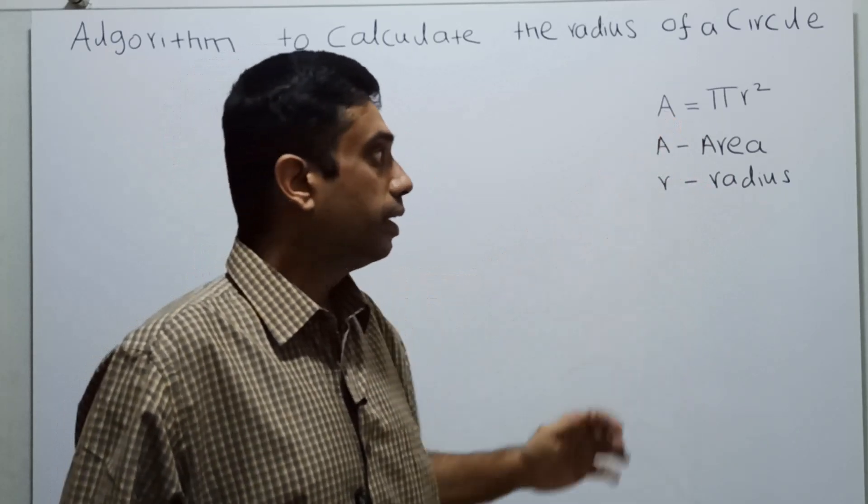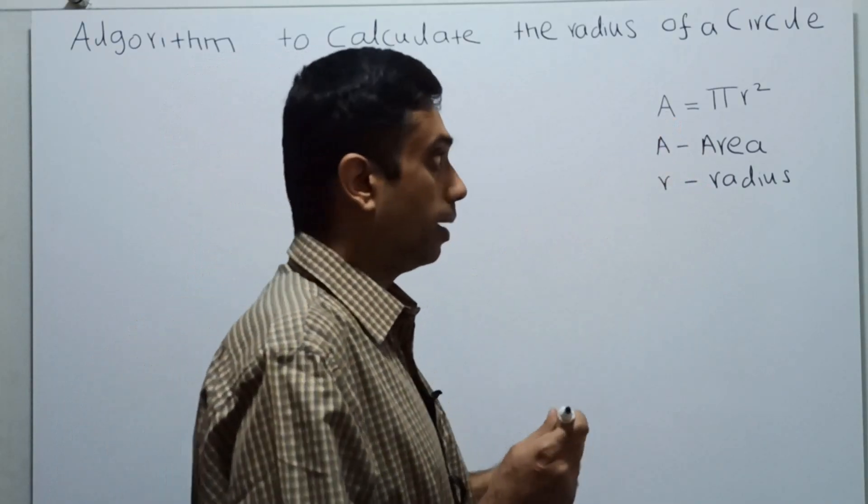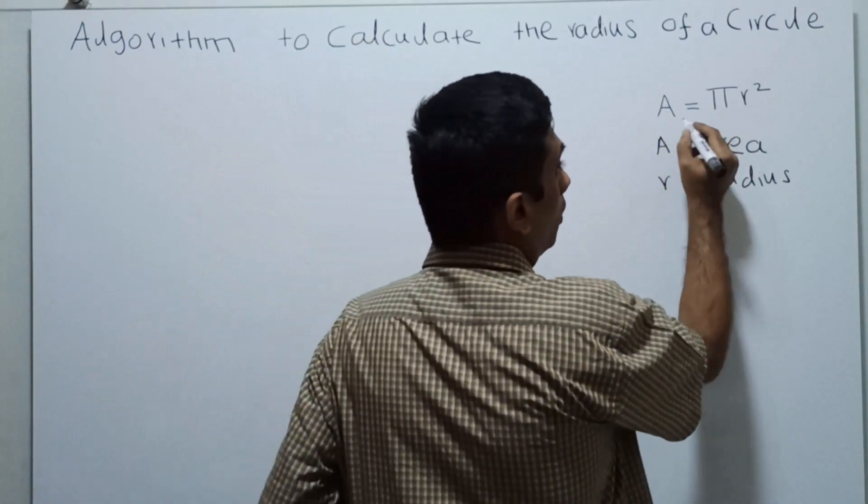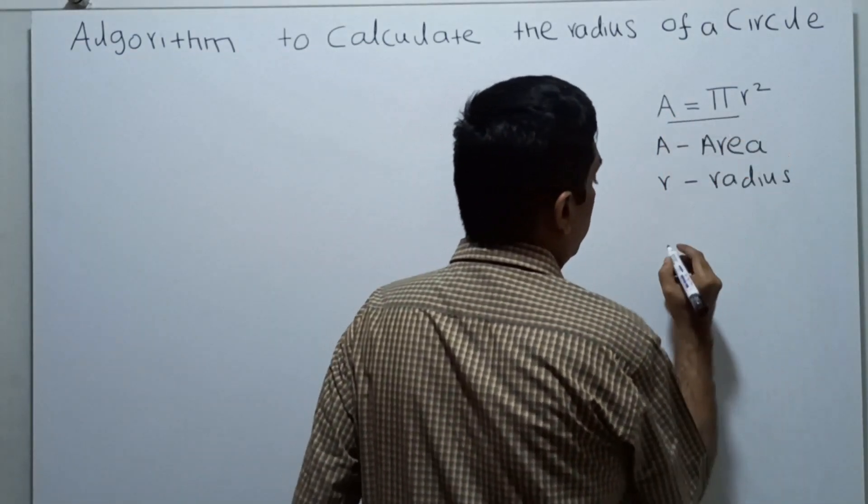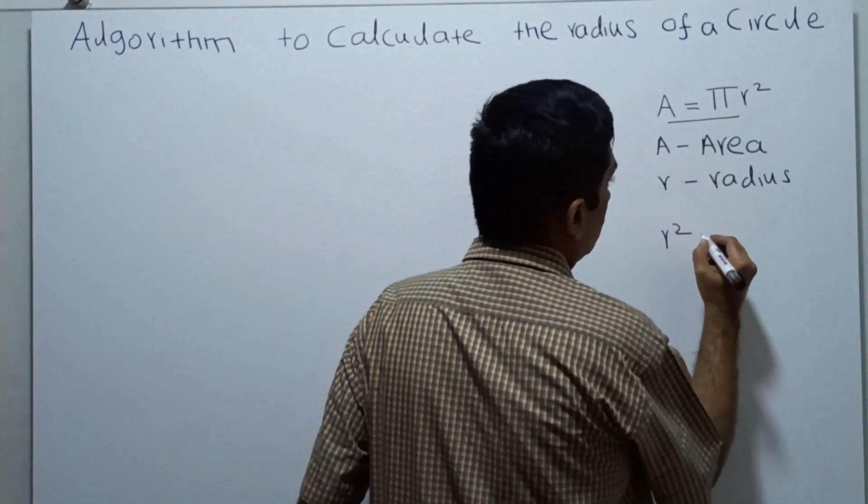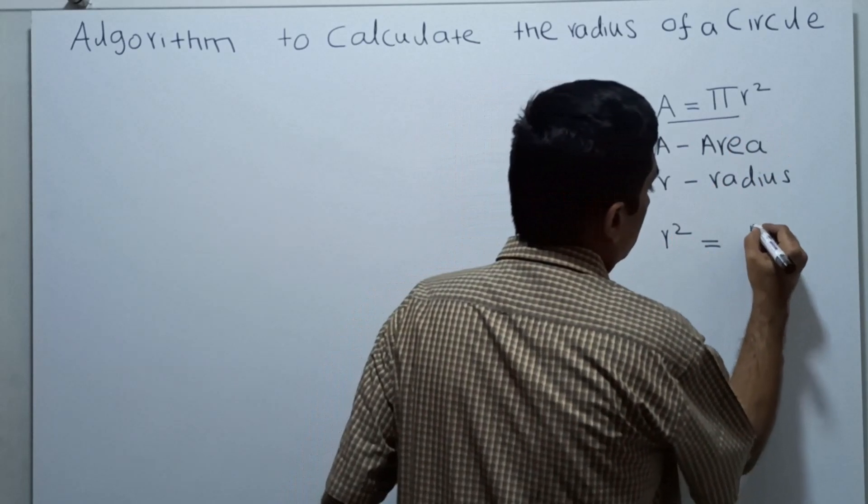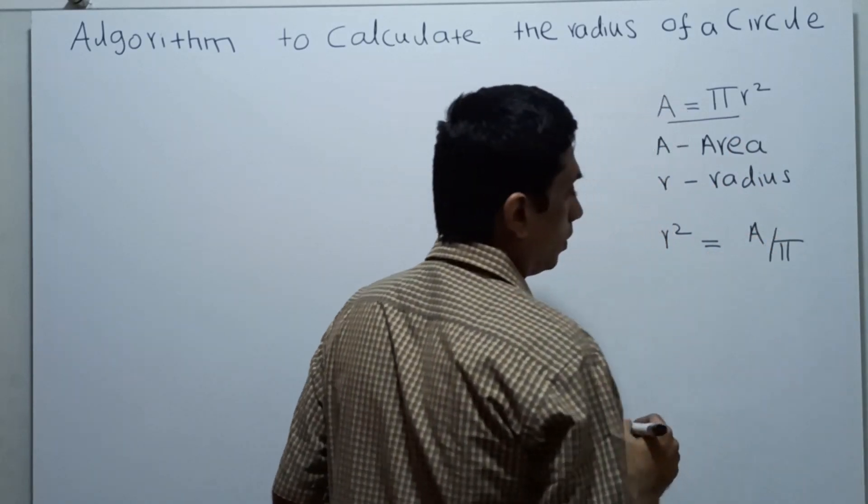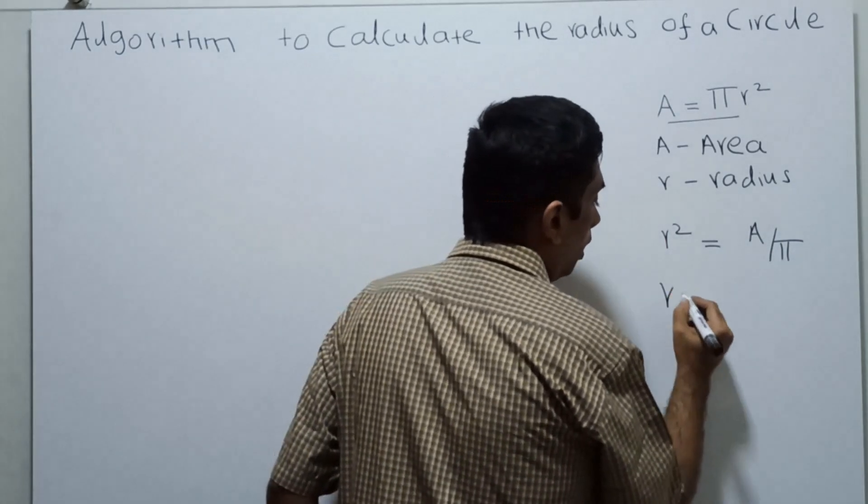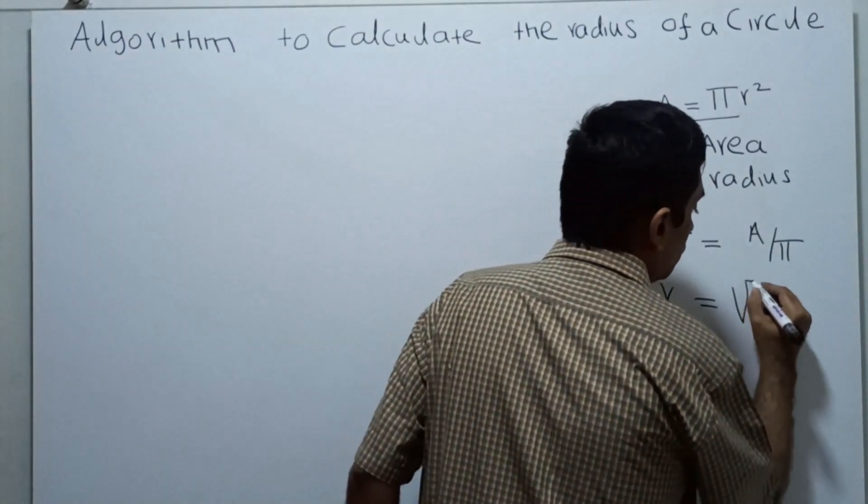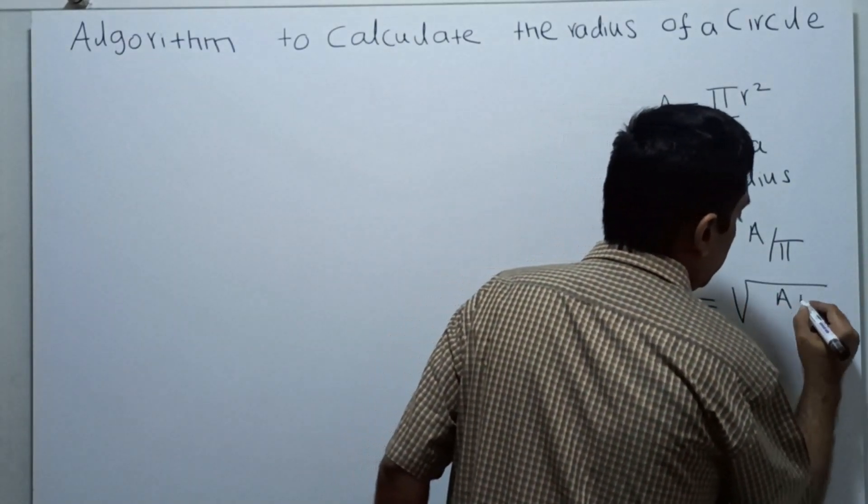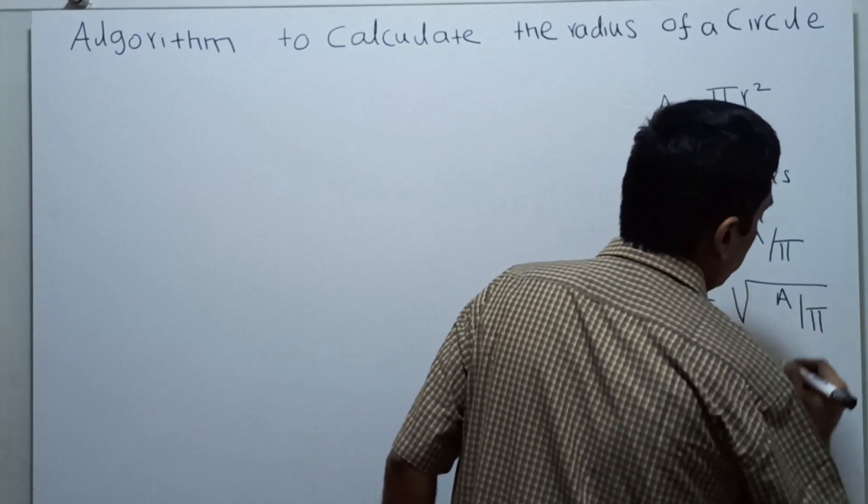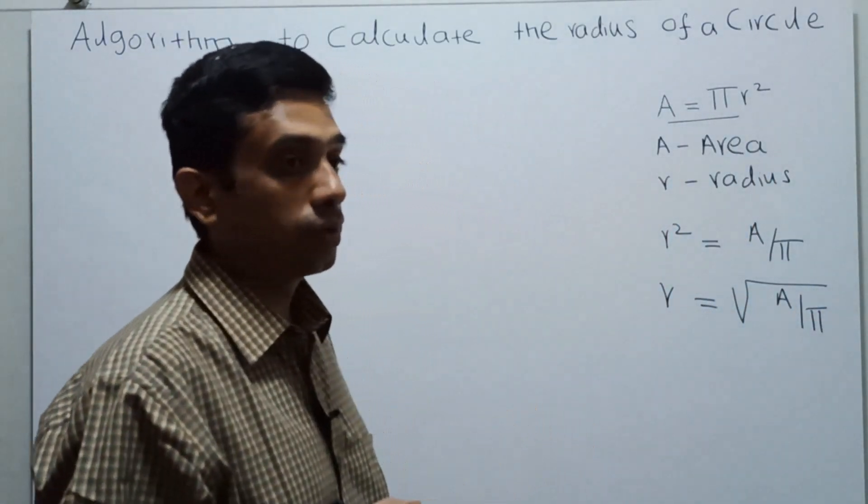The formula to calculate the area is A equal to pi r square. If I change the formula a little bit, I can say that from this formula r square is equal to A divided by pi. So r is equal to square root of A divided by pi.